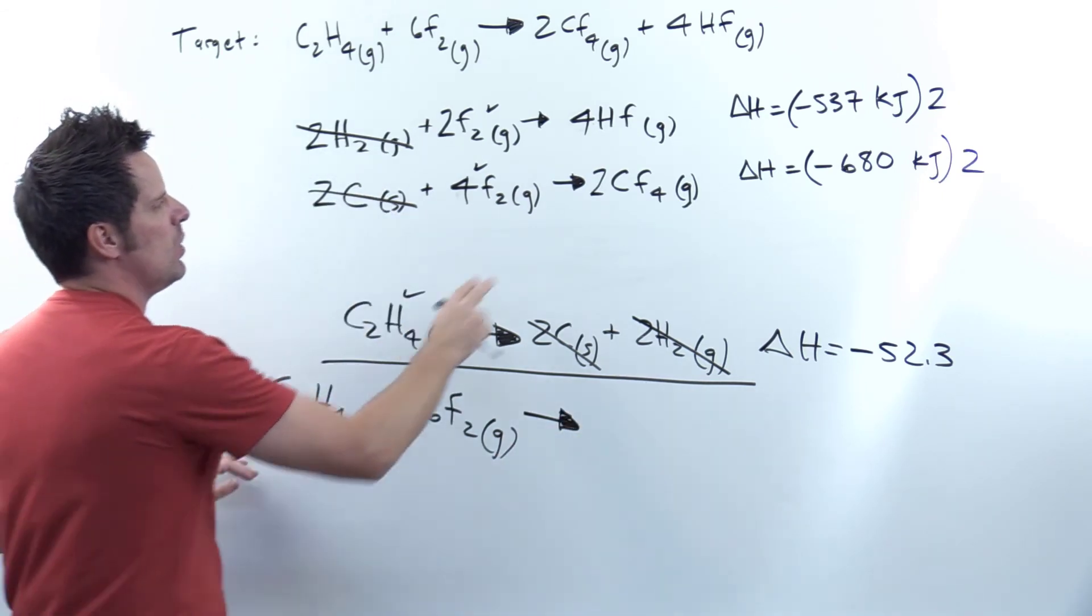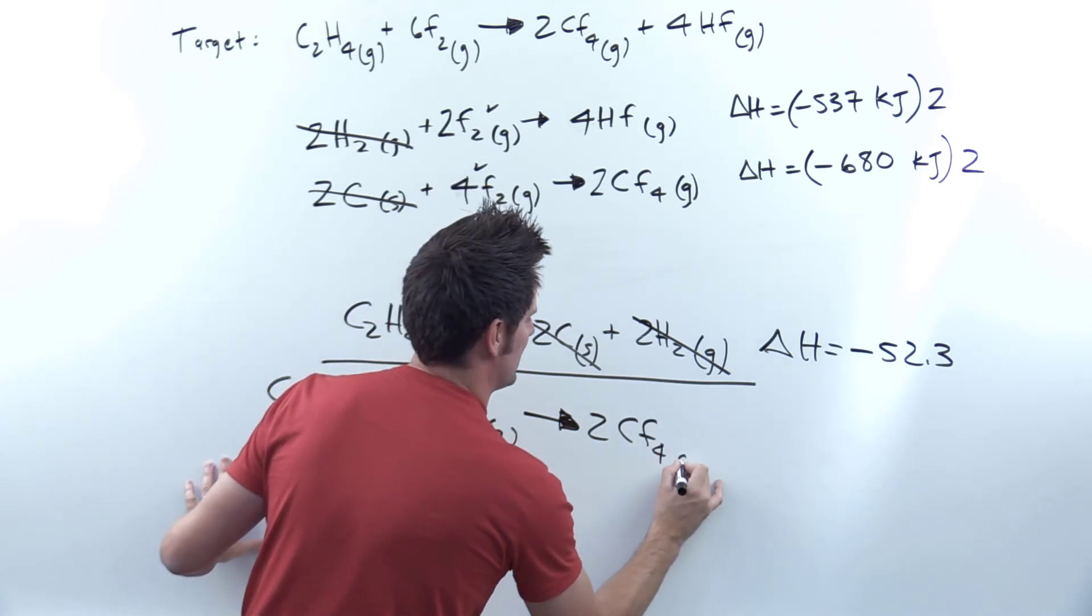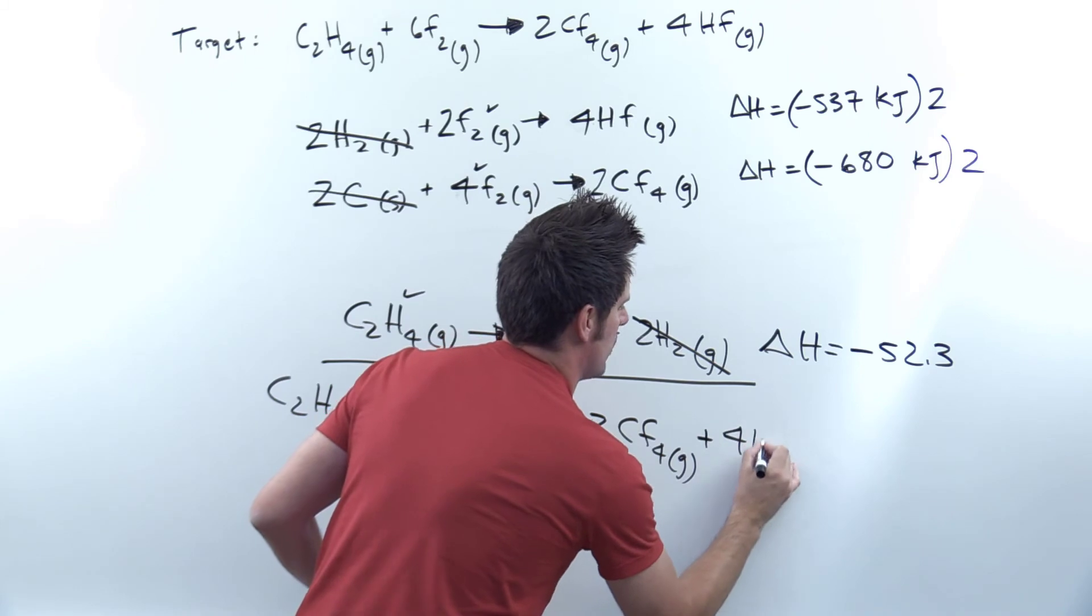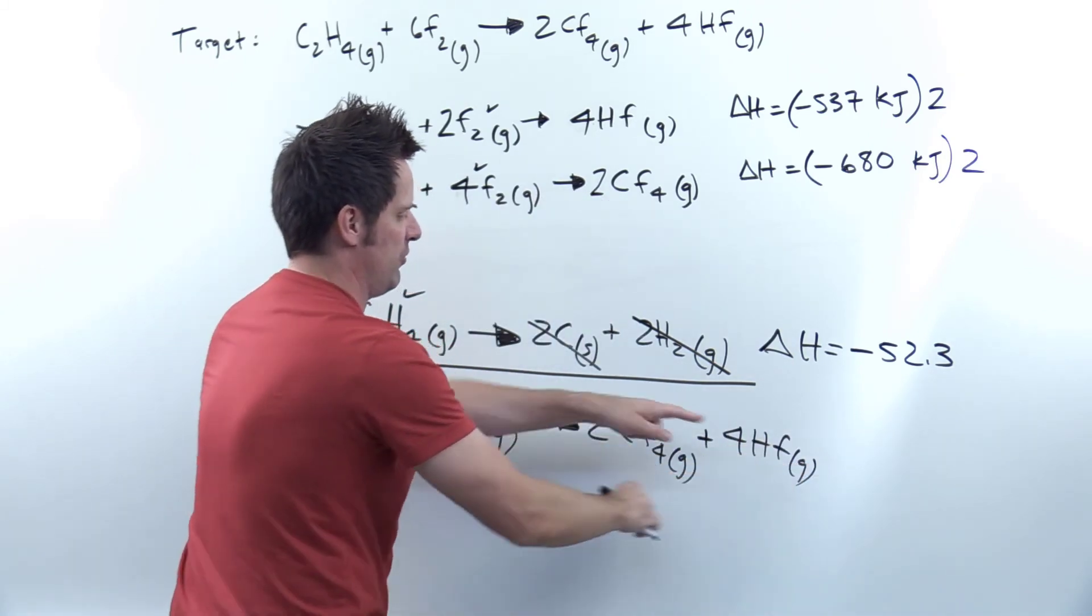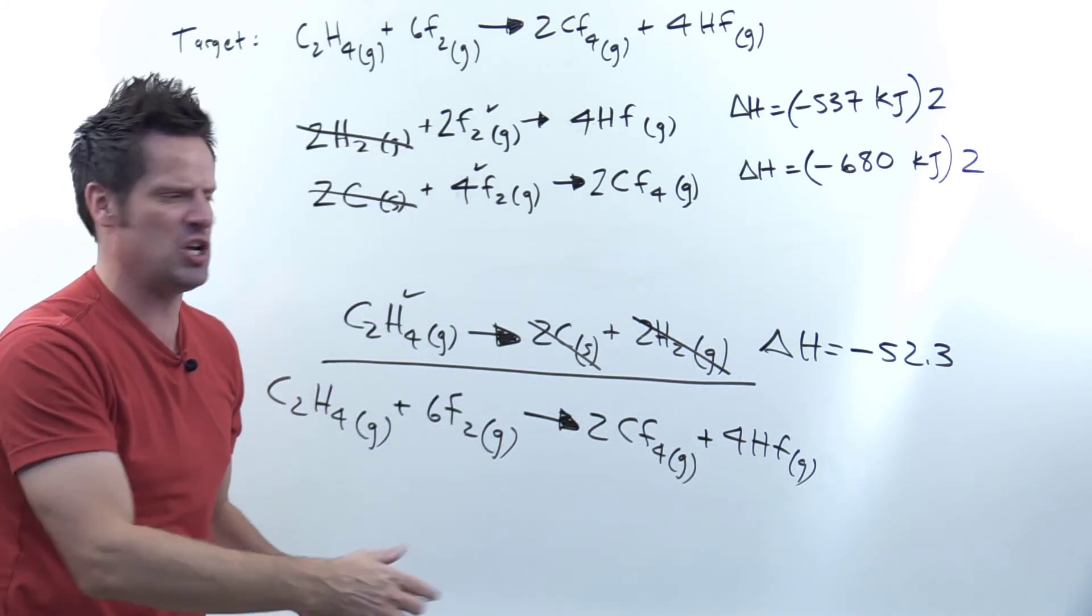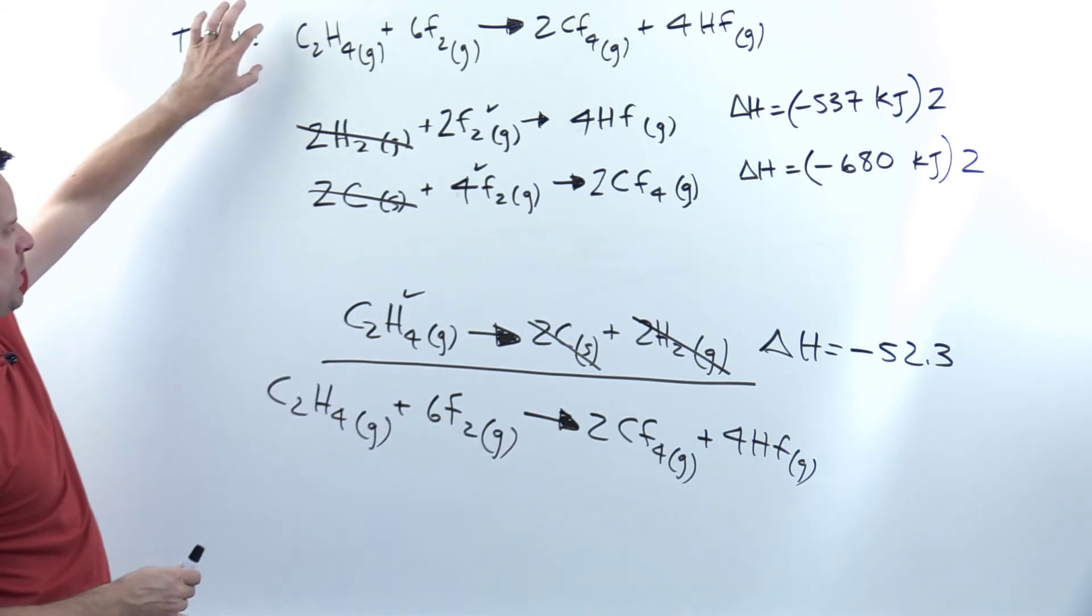Now let's see what I have on the right. On the right, I've got two CF4s right here, two CF4 gases, and I have four HFs. Now it doesn't matter the order that you add these together in. If you'd put four HFs here and then two CF4s there, if you'd flip these, it's the same thing because two plus four is the same as four plus two. So I have all of that written there. Now does that match my target equation up here? You bet it does.